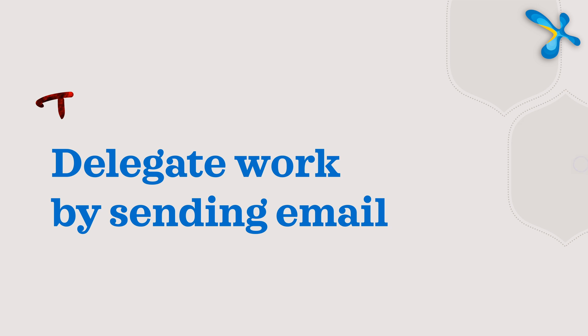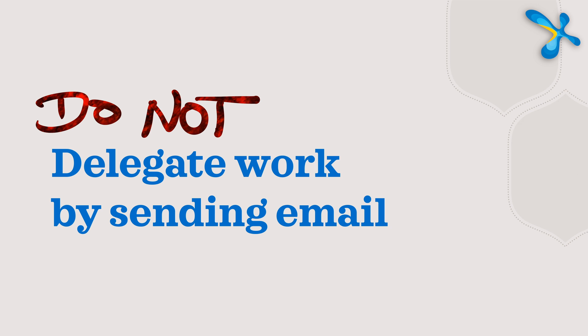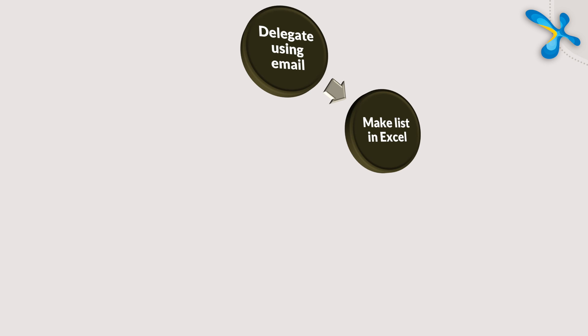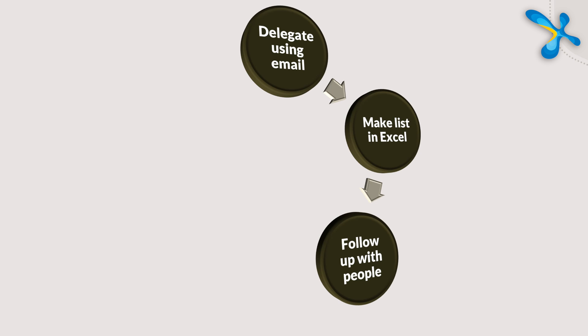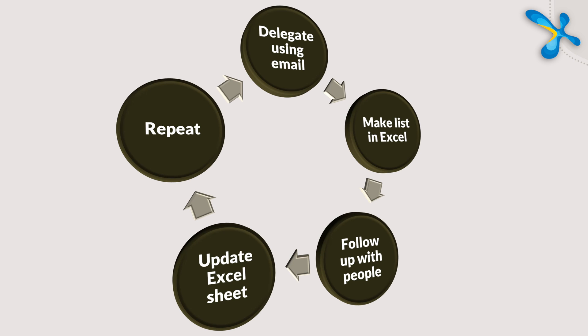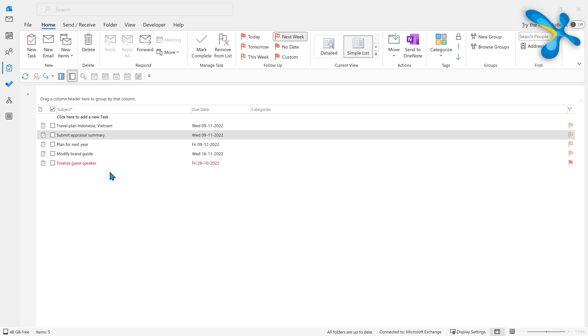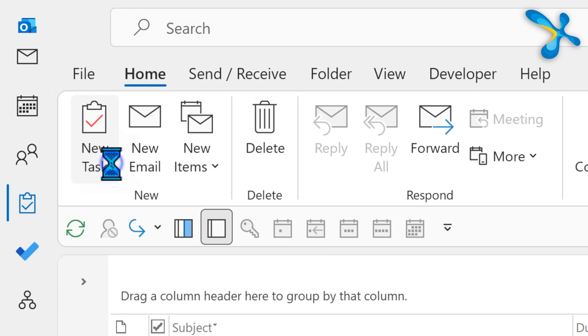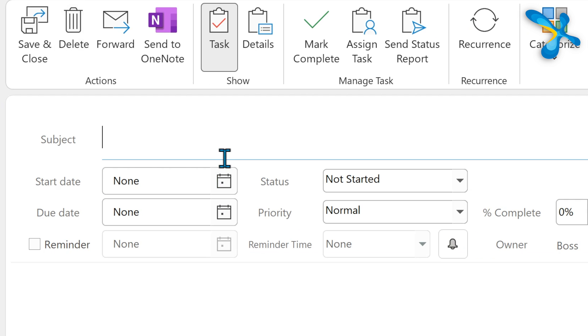Most probably you're going to forget to follow up, and that person also delays it — it's a disaster. Even if you have an admin assistant managing this, they're making another follow-up list in Excel, which is inefficient. So let's do it in tasks. Go to the task folder, click the New Task button to create a new task — it's a bigger window — and the key thing here is the Assign Task button.